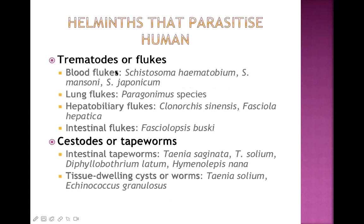The second group is trematodes or flukes, subdivided into blood flukes, lung flukes, hepatobiliary flukes, and intestinal flukes. Blood flukes are called Schistosoma - Schistosoma haematobium, Schistosoma mansoni, and Schistosoma japonicum. Schistosoma haematobium causes bladder infection; Schistosoma mansoni and japonicum are associated with the portal vein. They are blood flukes living inside the blood vessels of those particular organs.